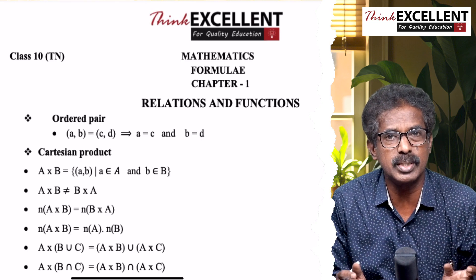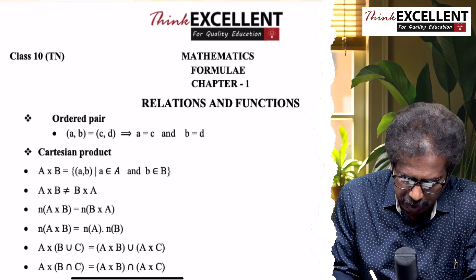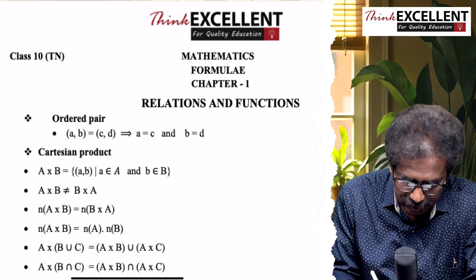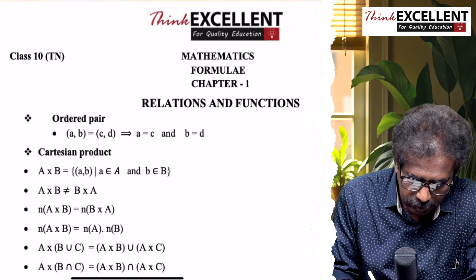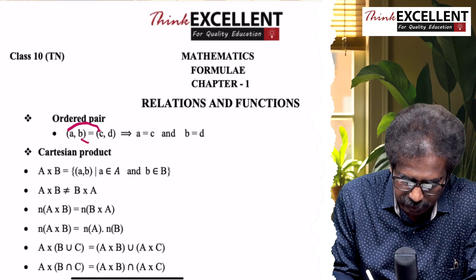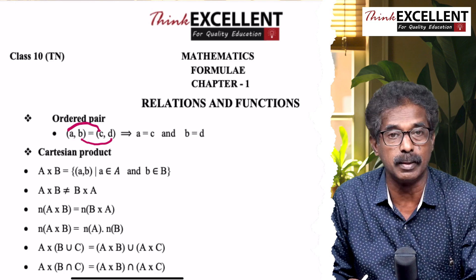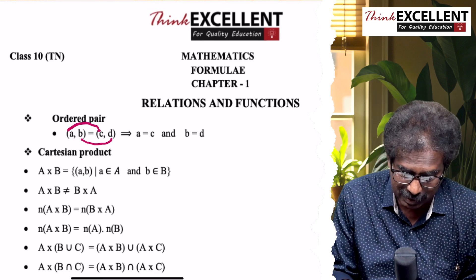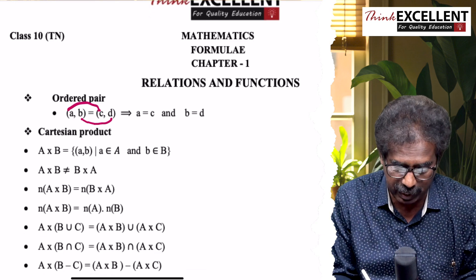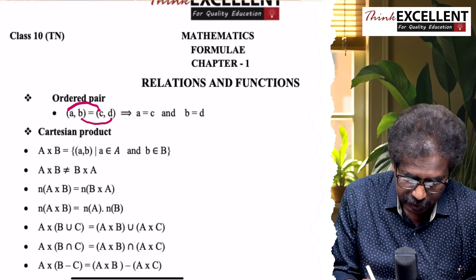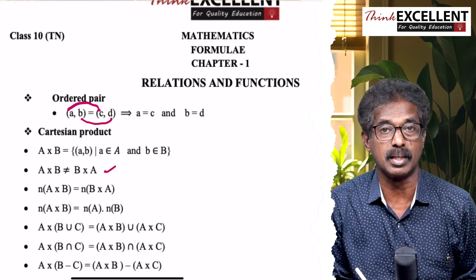First chapter, relations and functions. Very easy topic. What do you want to learn? Ordered pair. When can you say two ordered pairs are equal? (a,b) = (c,d) when first is equal and second is equal: a = c and b = d.